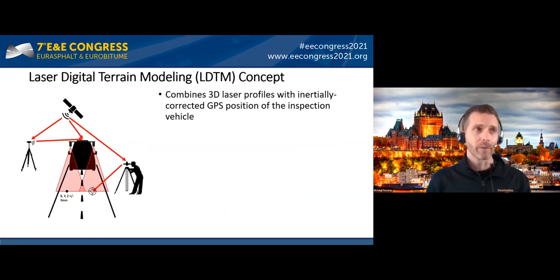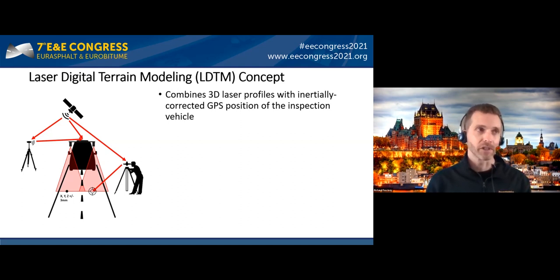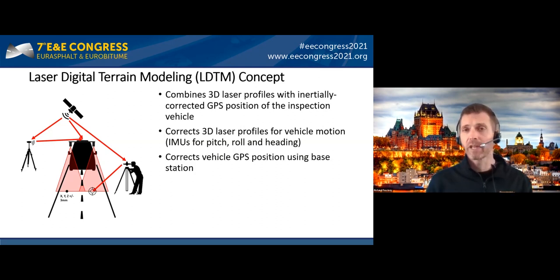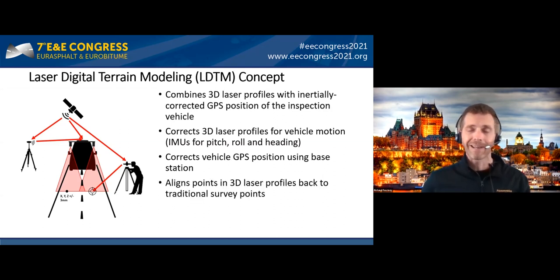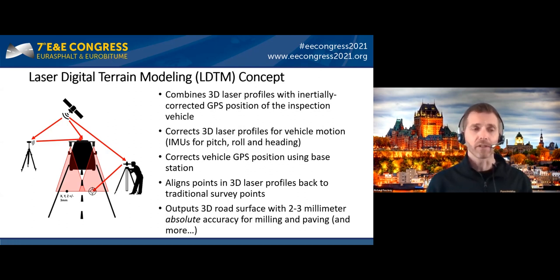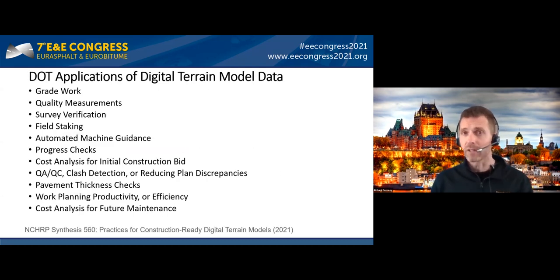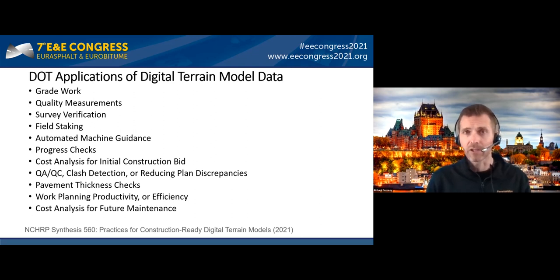The LDTM concept combines 3D laser profiles with inertially corrected GPS position of an inspection vehicle. It corrects those 3D laser profiles for heading motion and vehicle motion as it rolls down the road, corrects GPS position using base station data, and aligns the points of the 3D scans back to traditional survey points. The end result is a 3D surface of the entire road with two to three millimeter absolute positional accuracy, suitable for milling and paving type applications. Applications include synthesis grade work, quality measurements, progress checks, and payment thickness checks.